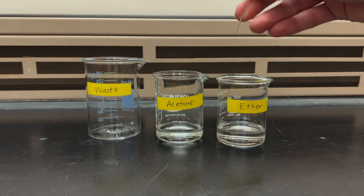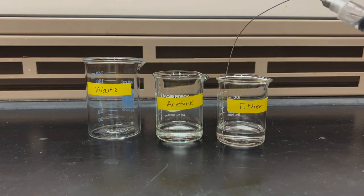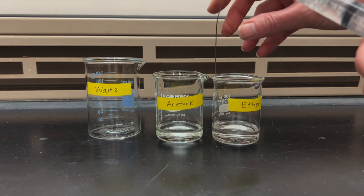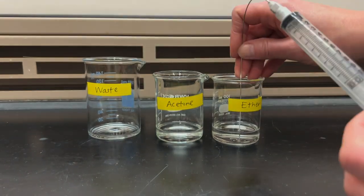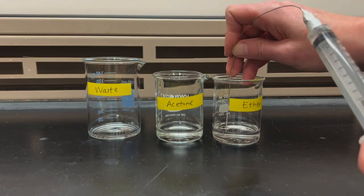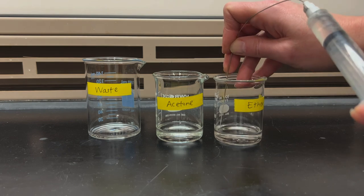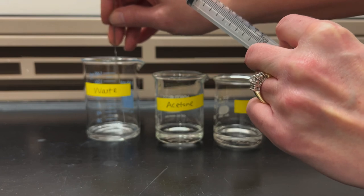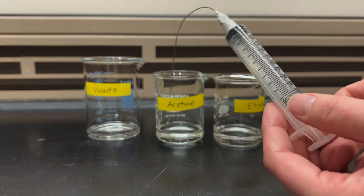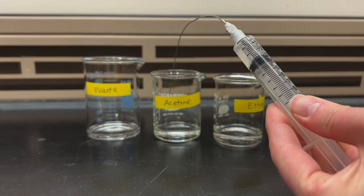When you're ready to clean your syringe then just bring it to a waste station and give it a series of rinses. Start with a solvent that the reagent should be soluble in. Like if it was a solution in ether then you want to start with ether. Rinse that out twice or so. And then follow it up with acetone and then your needle should be clean.